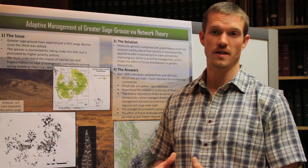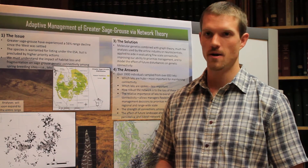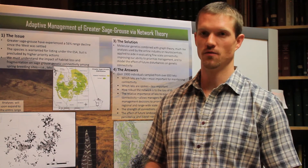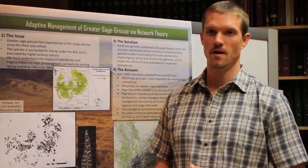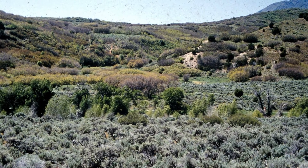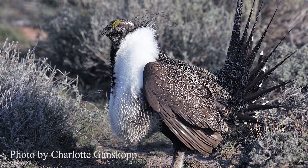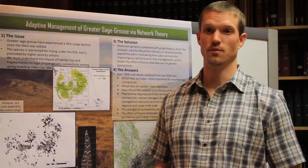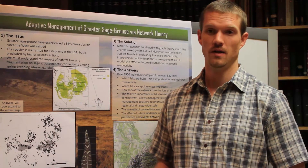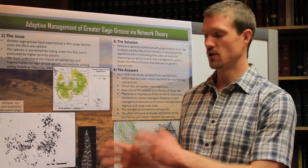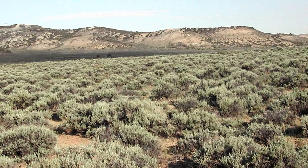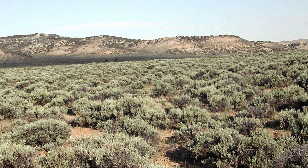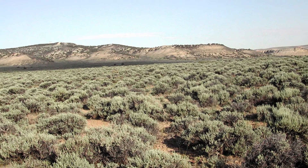Preserving an intact sagebrush habitat influences so many species — from mule deer to pygmy rabbits and countless passerine birds that require intact sagebrush landscape. People call sage grouse an umbrella species, or even the canary in the coal mine for sagebrush habitats. So our work in conserving sage grouse will actually pay dividends in preserving this landscape for future generations to go out, recreate, and witness these processes that have been going on for millennia.